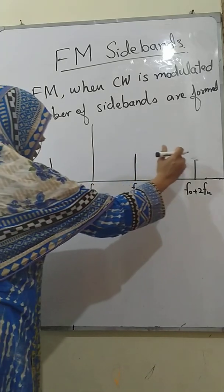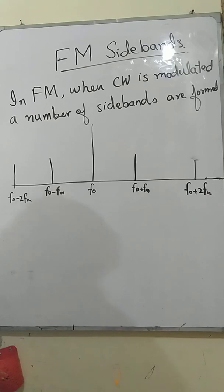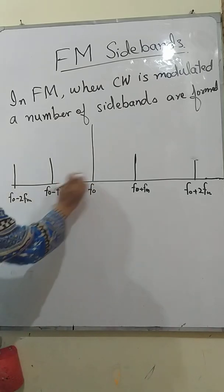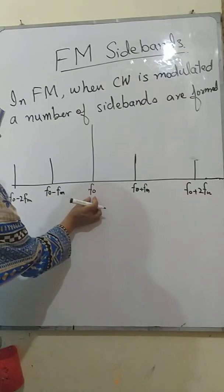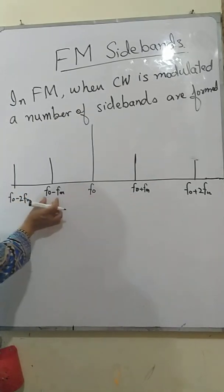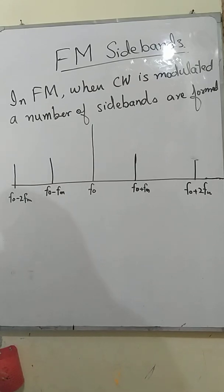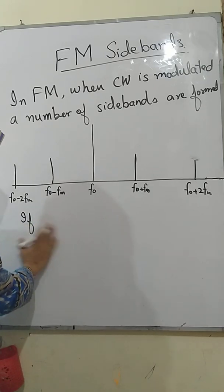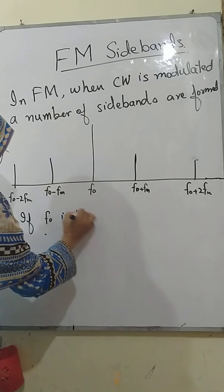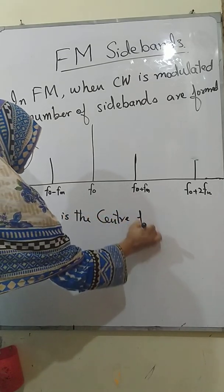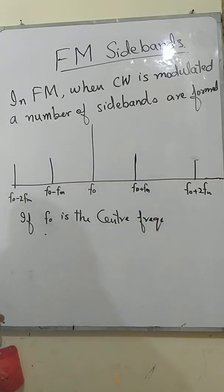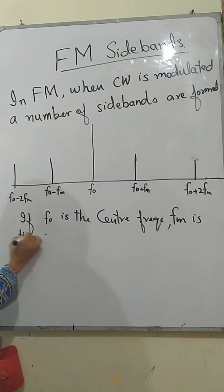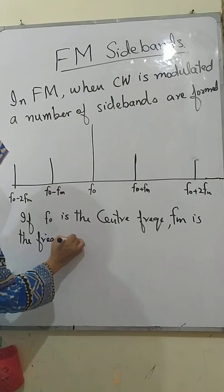Gradually, the strength of these sidebands goes to decrease, and after some sidebands their strength will be negligible. These bands lie on both sides of the center frequency — one band in the positive direction and the other band in the negative direction. Here F0 is the center frequency and Fm is the frequency of the modulating signal.